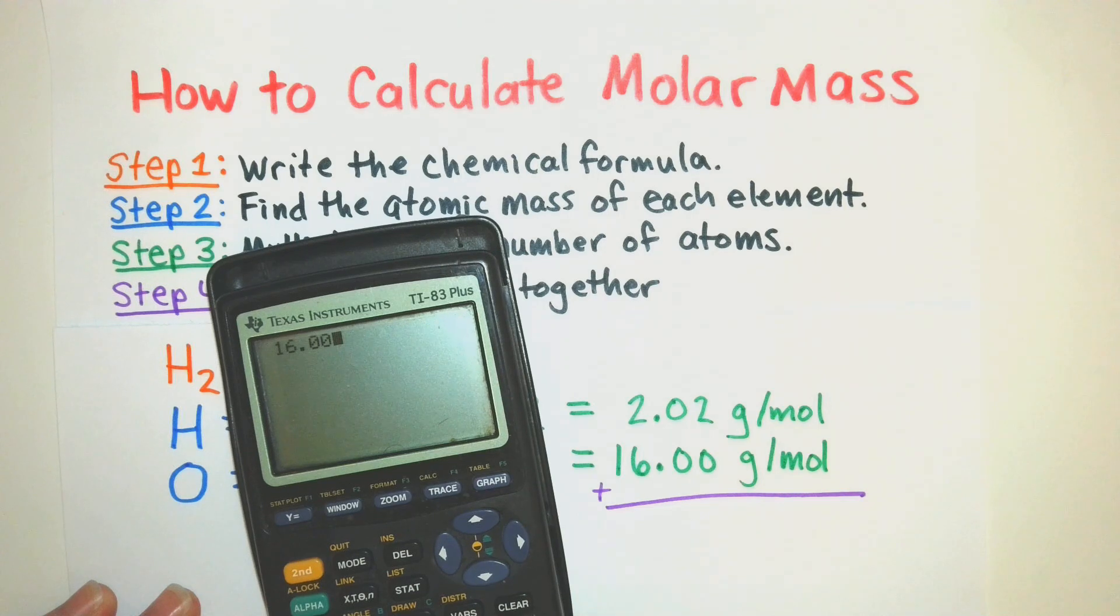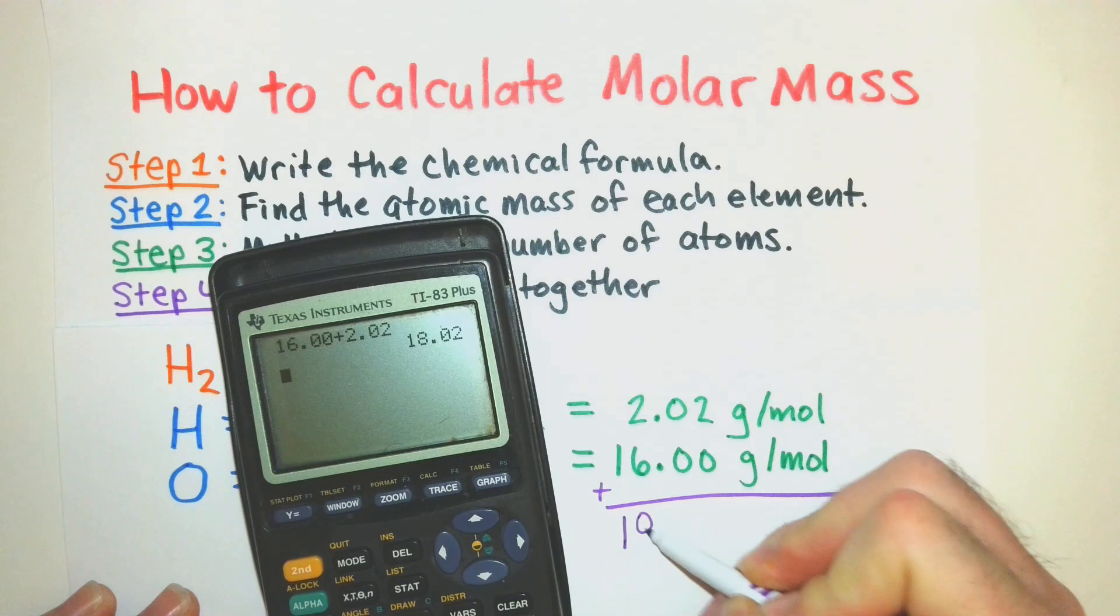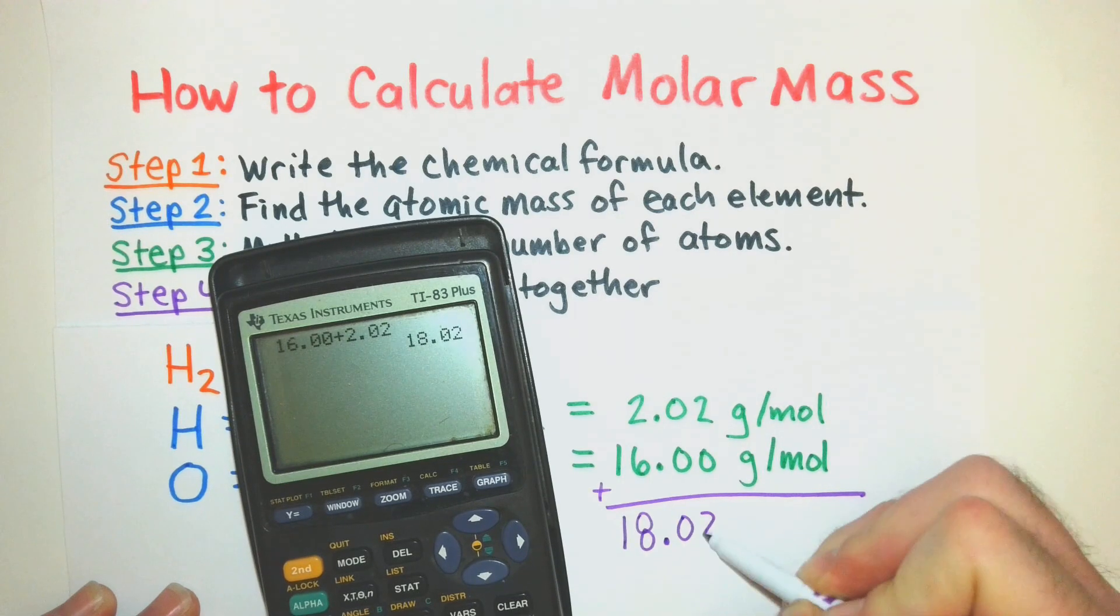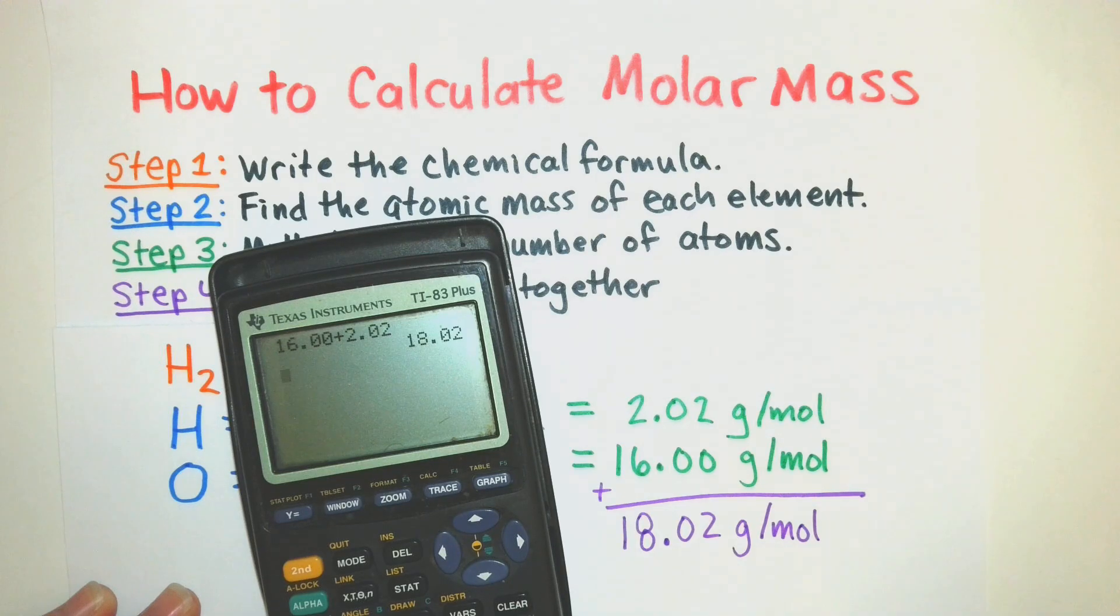16.00 plus our 2.02 will give us our 18.02, which I bet you already had that in your head, grams per mole.